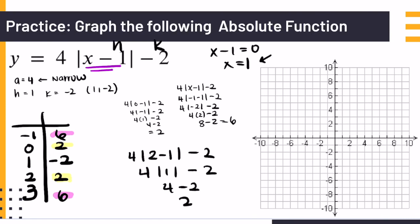Then you graph it. So negative 1, 6, right here. 0, 2. 1, negative 2. 2, 2. 3, 6.